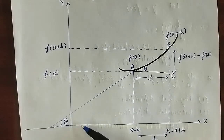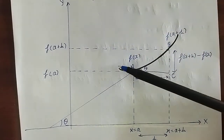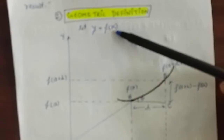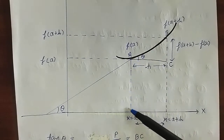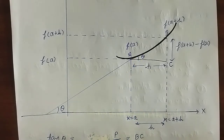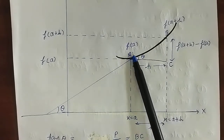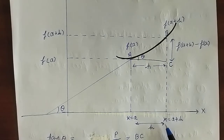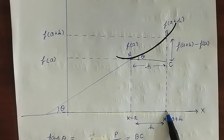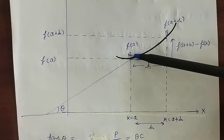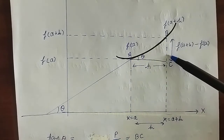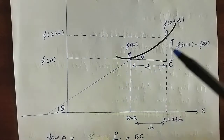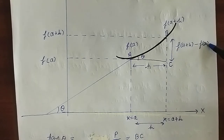Graph में हमारे दो axes हैं: x-axis और y-axis। Function y equal to f of x का एक graph है। एक point A है जहाँ x equal to A है, और थोड़ा आगे एक point B है जहाँ x equal to A plus h है, यहाँ h एक बहुत small value है। A और B के y-axis पर values क्रमशः f of a और f of a plus h हैं। इन्हें मिलाने पर एक right angle triangle बनता है जिसमें AC equal to h और BC equal to f of a plus h minus f of a है।